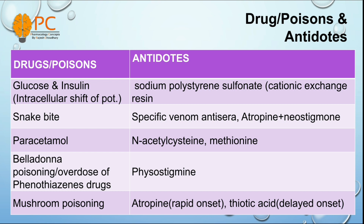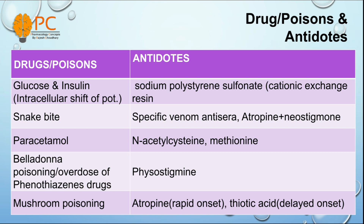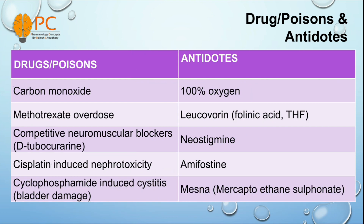And for paracetamol poisoning or overdose, we can use N-acetylcysteine and methionine. And for belladonna poisoning or overdose of phenothiazine drug, we can use physostigmine as antidote. And for mushroom poisoning, means acetylcholine poisoning, we can use atropine or thioctic acid as antidote. And for carbon monoxide, we can use 100% oxygen. And for methotrexate overdose, we can use leucovorin, which is folic acid or tetrahydrofolic acid. Methotrexate can cause deficiency of folic acid.